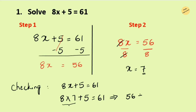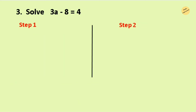56 plus 5 equals 61. On the right-hand side write it as it is. In the next step, 56 plus 5 gives you 61, so 61 equals 61 — both sides are equal, which means the answer is true.